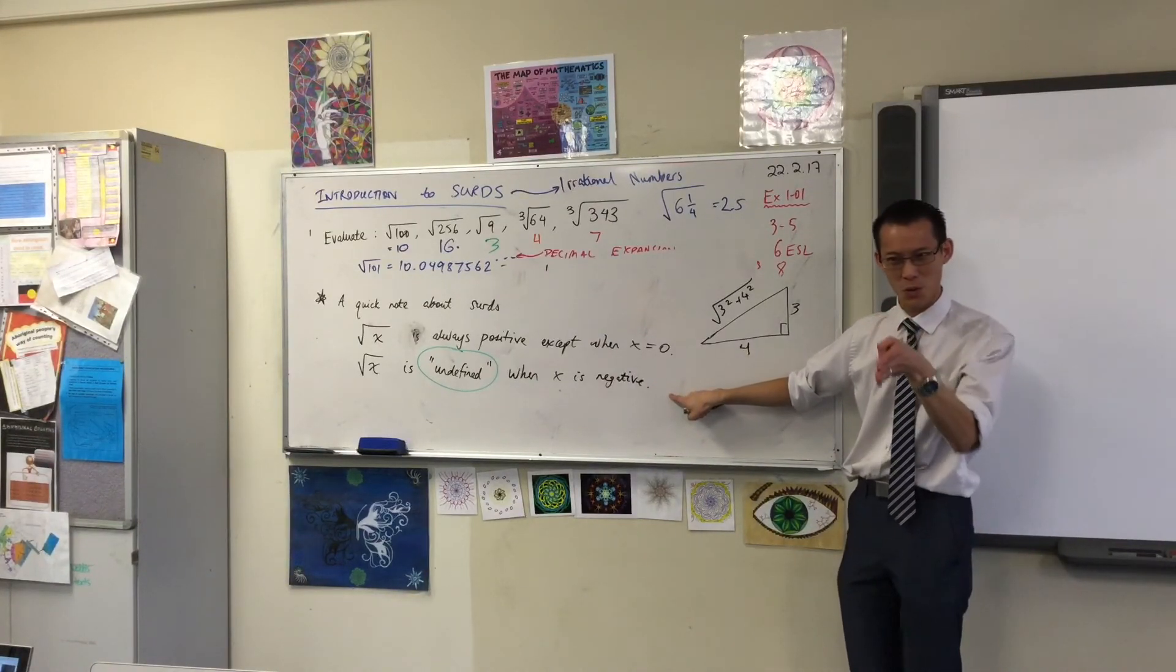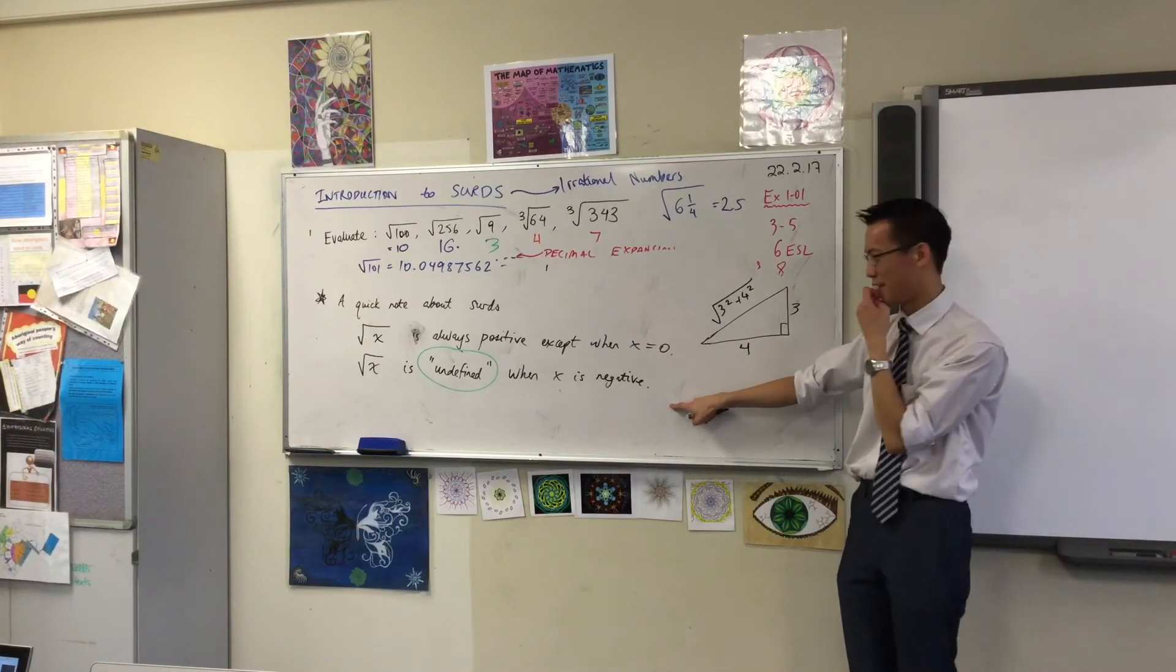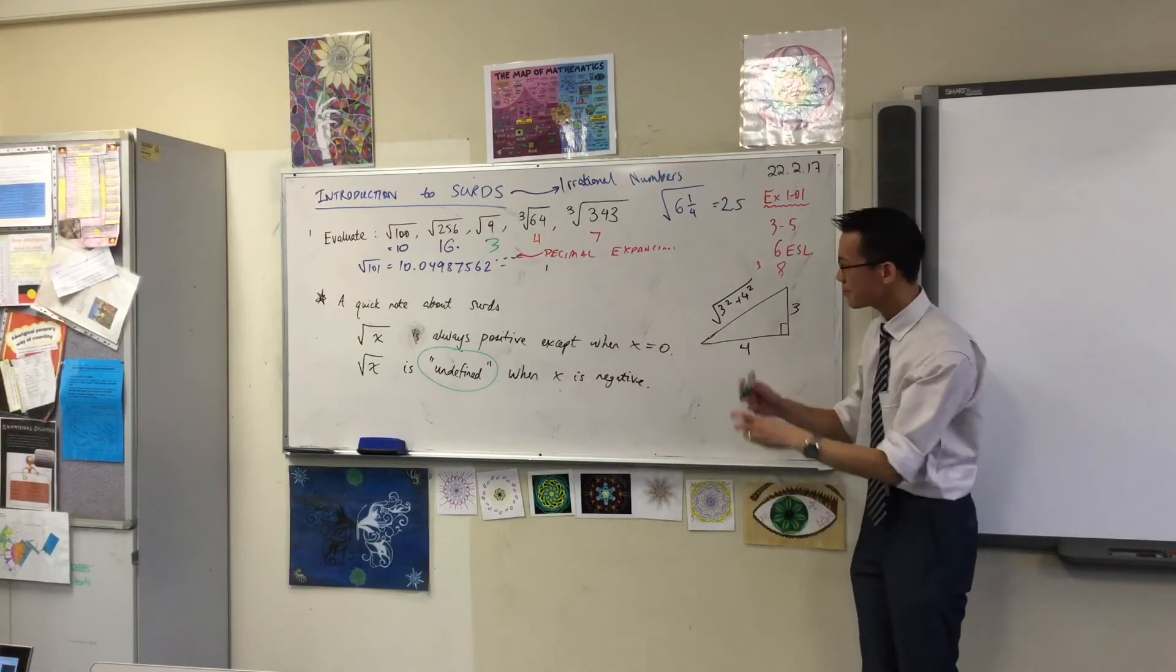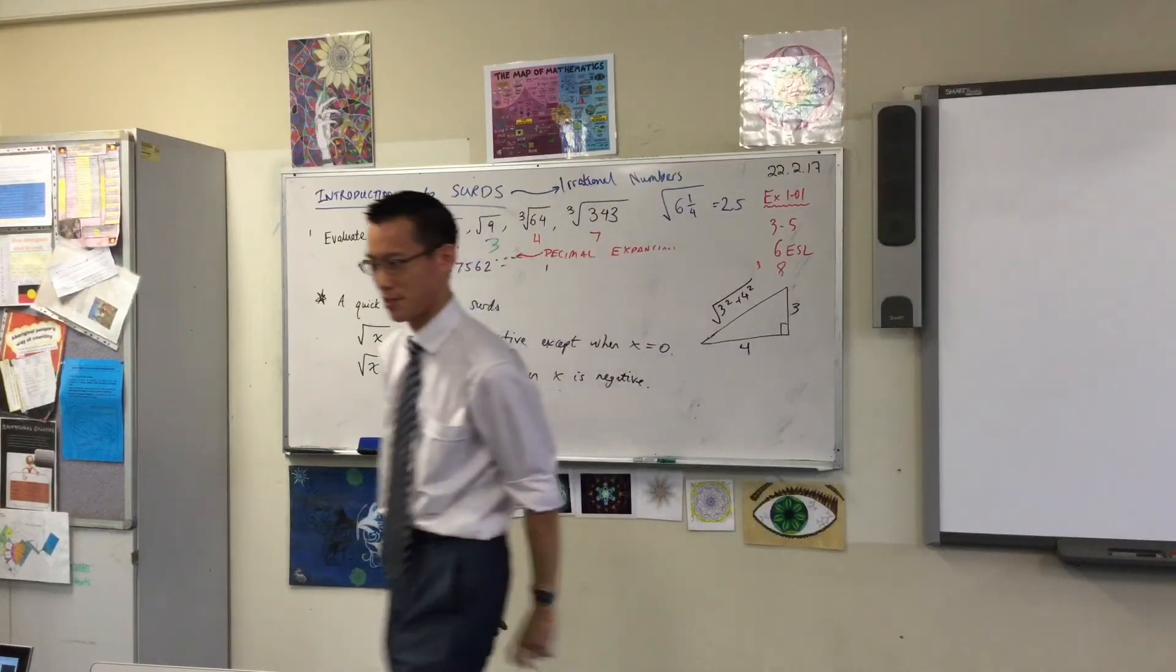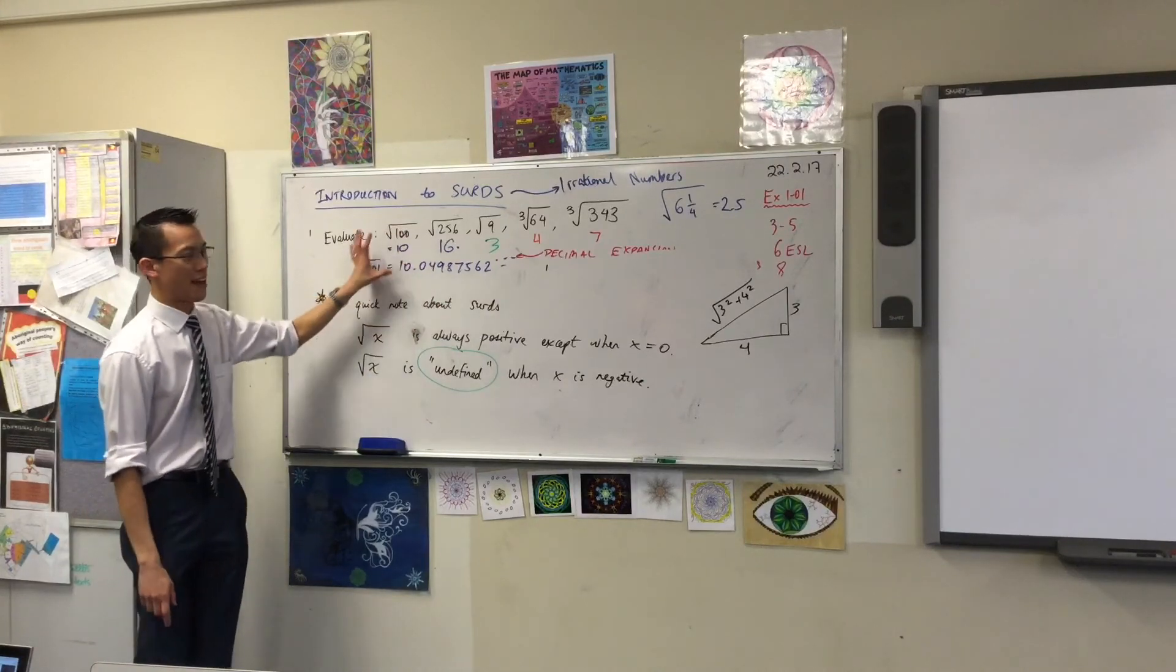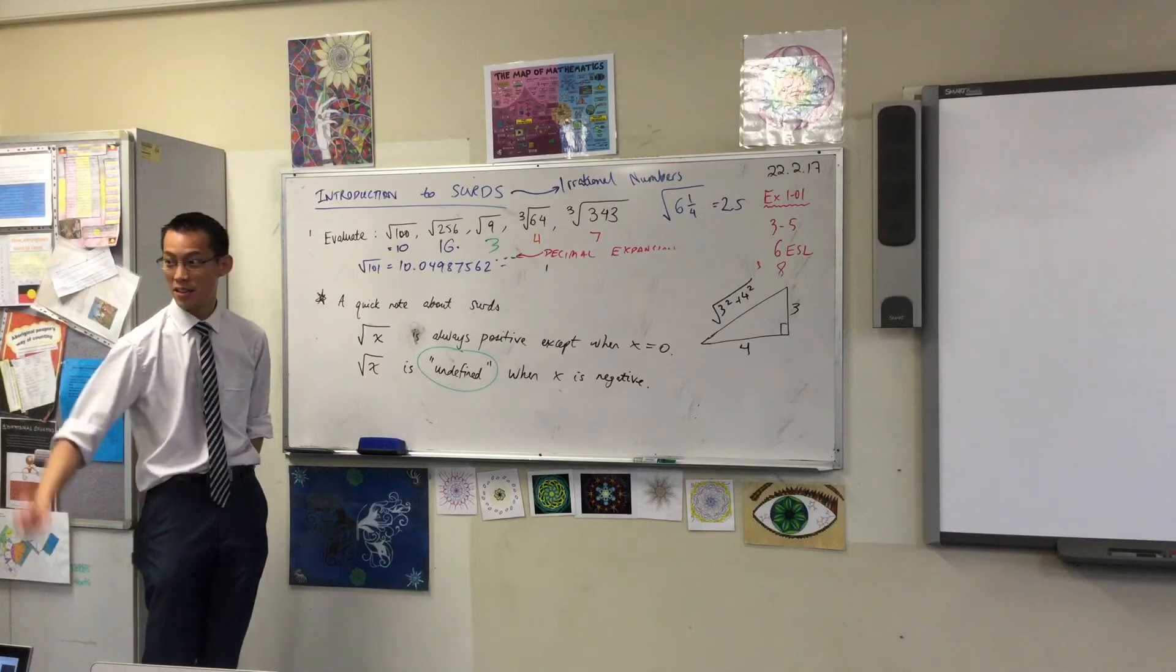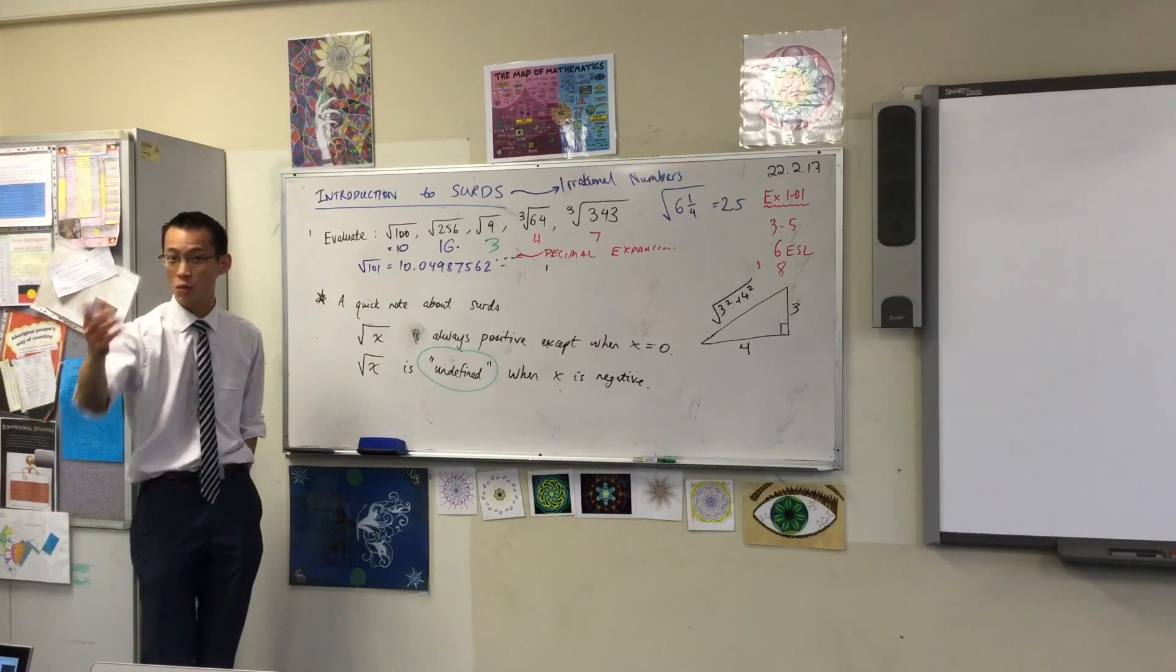All right, I'm going to pause there. You've all by now opened up to page 101. You've got enough to understand what's a surd and what's not, right? Have a look on the board. How many surds are there on the board? Just look, there's just one, isn't there? Do you see which one it is? It's the one I asked you to work out: the square root of 101.